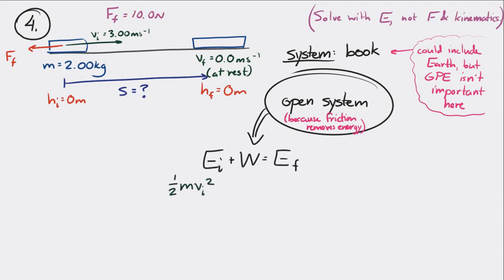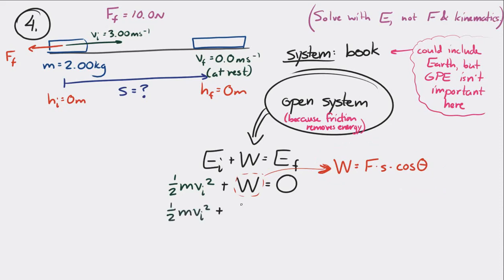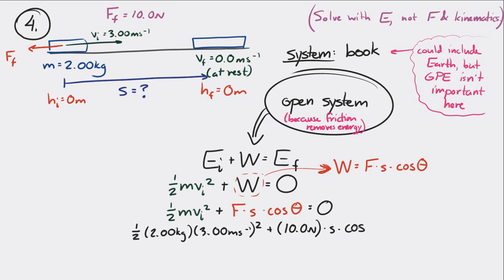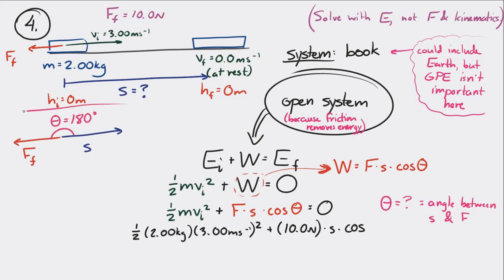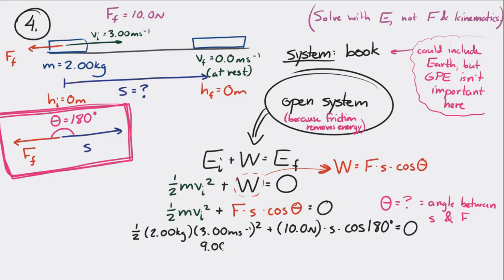At the beginning it only has kinetic energy. So one-half mv squared plus the work done on it equals zero. We can incorporate the force and displacement using W equals Fs cosine theta. The angle theta is the angle between the displacement and the force. The displacement is to the right, the force is to the left, so the angle between them is 180 degrees. So we have 10 newtons times S times cosine of 180 degrees, giving 9 joules minus 10 newtons times S equals zero. Solving for S, the displacement is 0.900 meters.